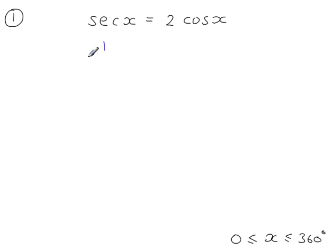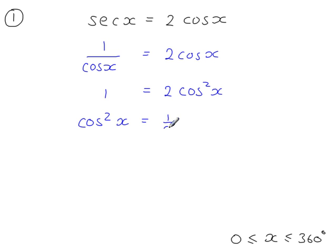So secant is 1 over cos. Multiplying both sides by cos x to get rid of this fraction. So on this side, cos x times that cos x will give you cos squared x. Dividing by 2 will give you cos squared x is equal to a half.